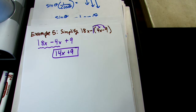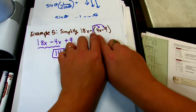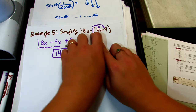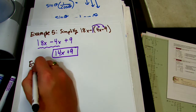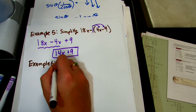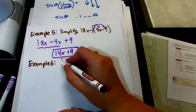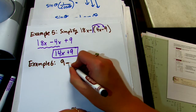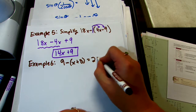Let's do another example like that where we have a negative and we're distributing a negative 1, but this time we're solving. Example 6: solve 9 minus the quantity x plus 8 equals 20.